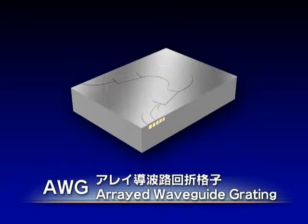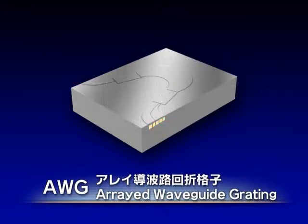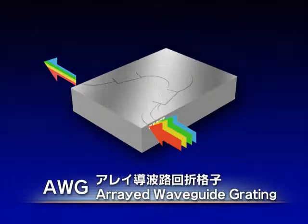The AWG functions like a prism. It takes an optical signal which has multiple wavelengths as the input, separates the signal into different wavelengths, and outputs them through separate ports. The reverse function is also possible — in other words, it can multiplex and demultiplex optical signals.